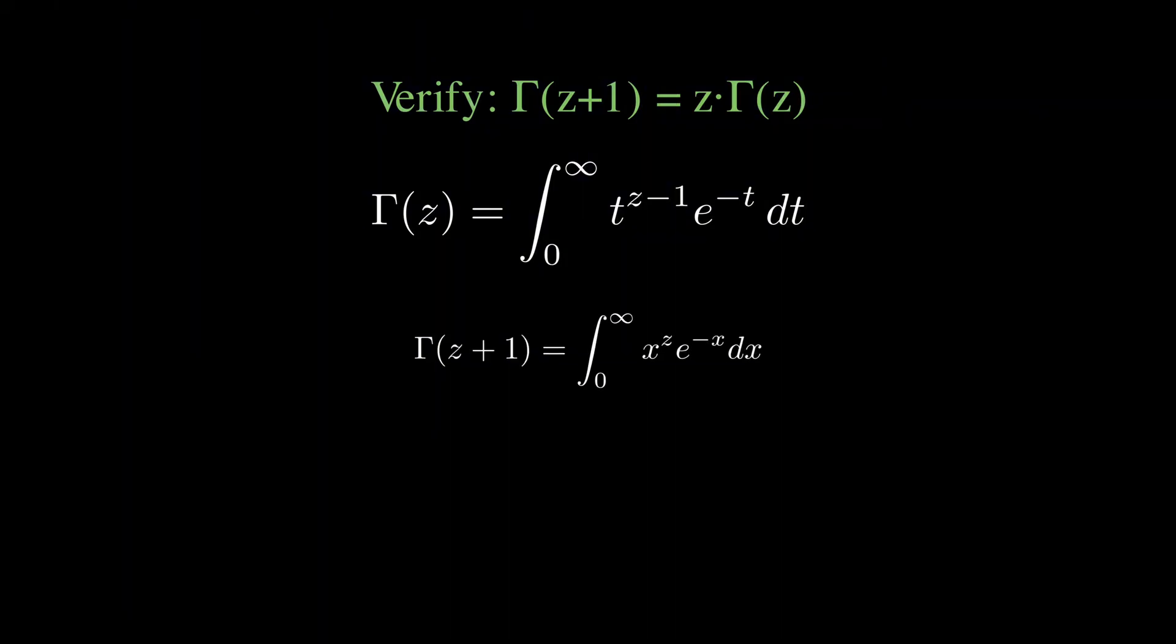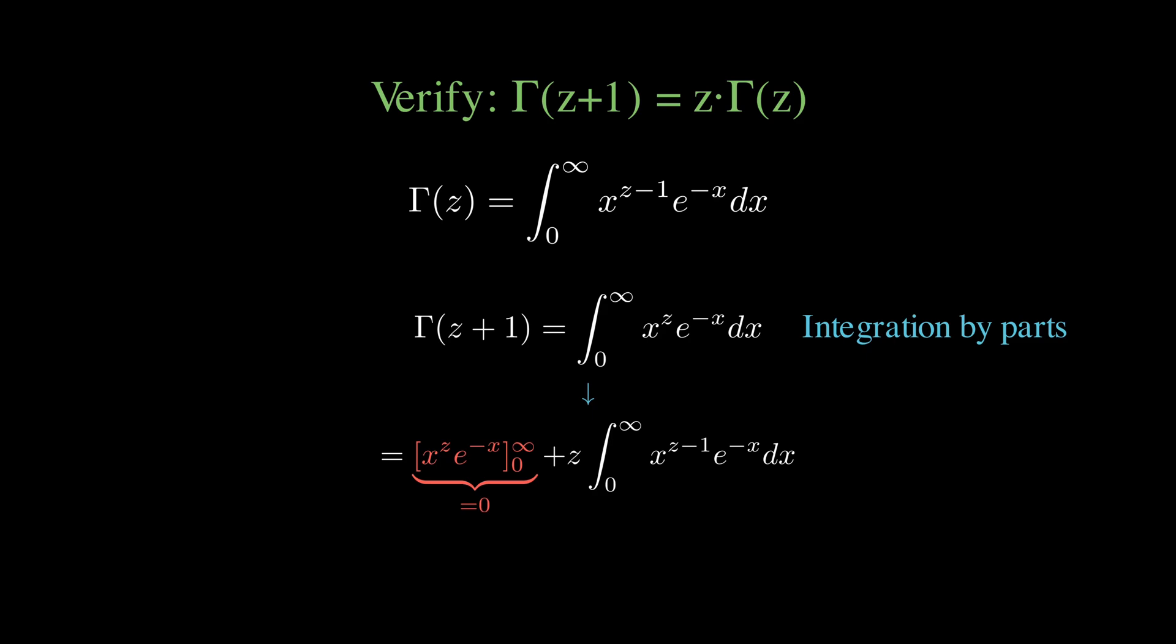Starting with gamma of z plus 1 equals the integral from 0 to infinity of x to the z times e to the negative x dx. We integrate the exponential part and differentiate the x to the z part. The boundary term vanishes because the exponential decay beats the polynomial growth. And what we're left with is z times the integral from 0 to infinity of x to the z minus 1 times e to the negative x dx, which is exactly z times gamma of z.